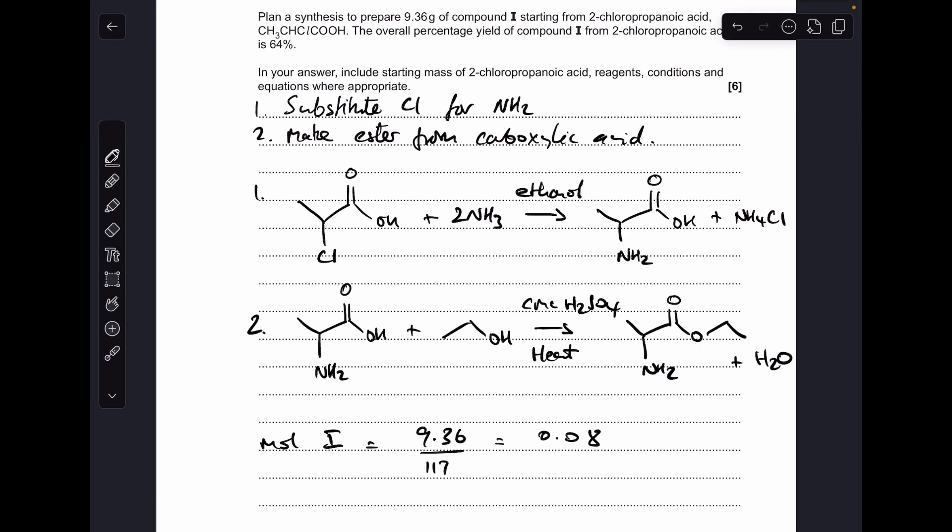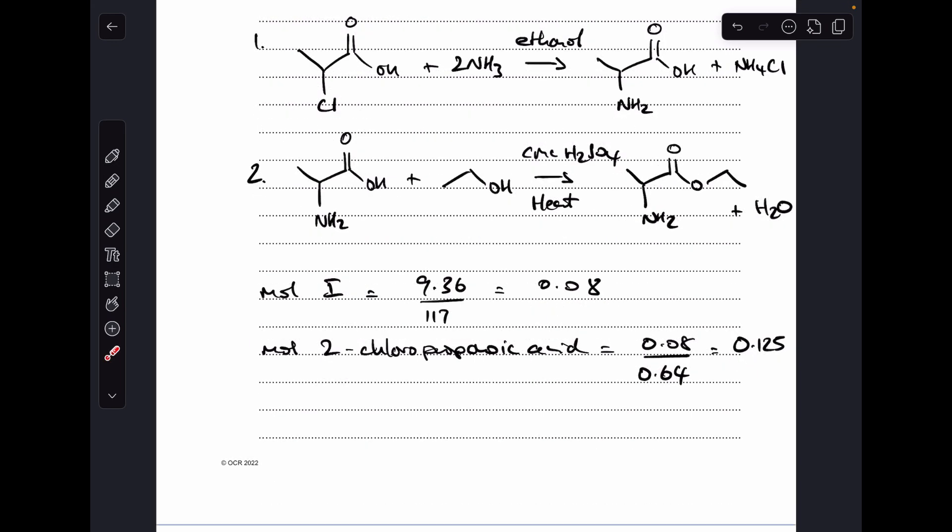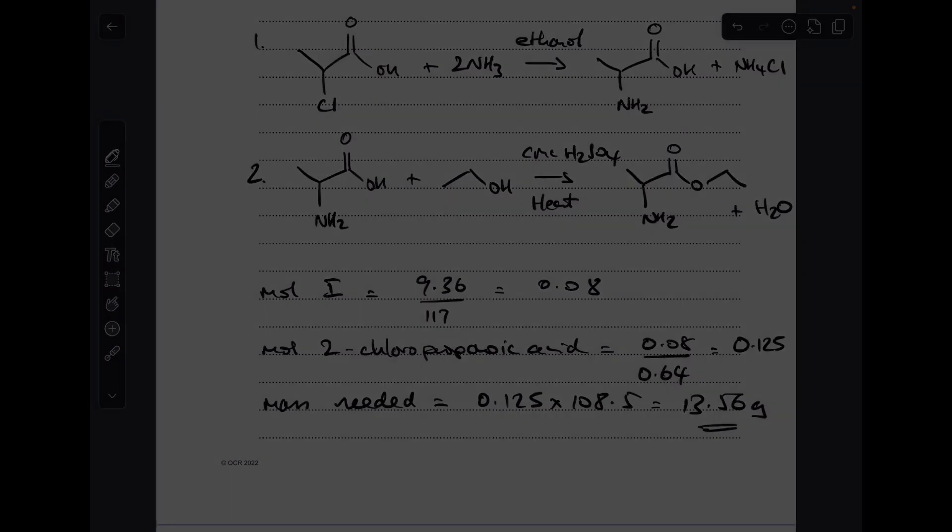So moving on to the calculation now, we've got to prepare 9.36 grams of compound I. The moles of I is just that mass over its MR, 0.08 moles. And then to find out the moles of the 2-chloropropanoic acid we're going to need, we're going to divide the moles by the yield, and that scales up, and we're getting 0.125 moles. Now all we need to do is multiply by the MR of 2-chloropropanoic acid to get the mass we'll need, which comes out at 13.56 grams.